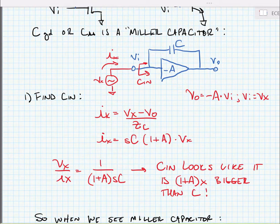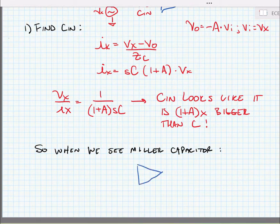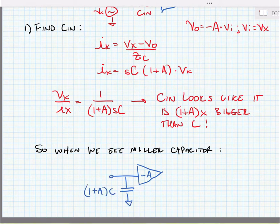When we see the Miller capacitor, we can break the capacitance and hang some of the capacitance at the input and some at the output. So we hang the input capacitance at the input, and we just found that the input capacitance was equal to 1 plus A times C. This is what we call an equivalent circuit. All right, next, let's go to the output.